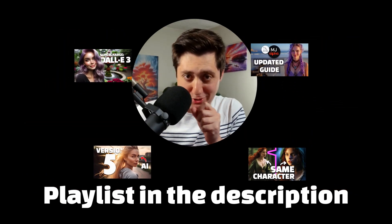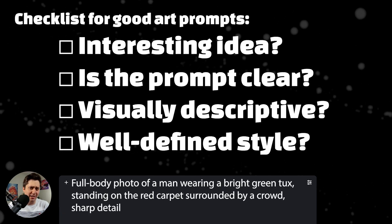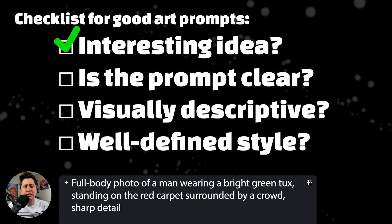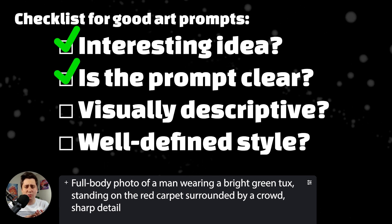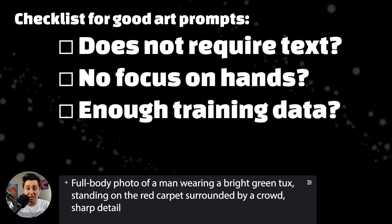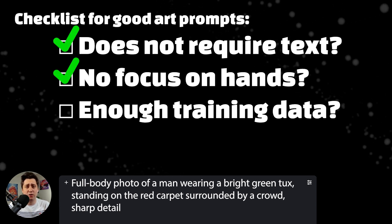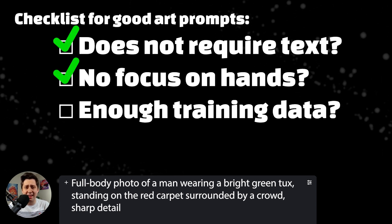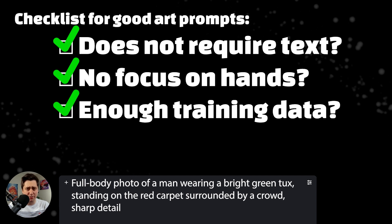If you've made enough AI art or watched a few of my tutorials, the next thing you probably do is go through a checklist in your head. It seems like a good prompt — it's clear, visually descriptive, it's an existing style, it's not focusing on text or fingers or anything else that the AI is bad at, and there's plenty of training data for images just like it. Based on everything that matters, this should go great, right? Wrong.